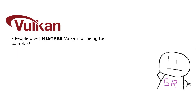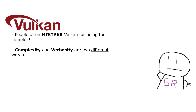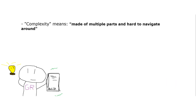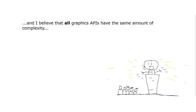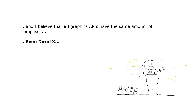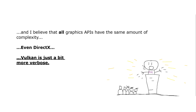Moving on to Vulkan. Most people say that the API is more complex than DirectX, but complexity and verbosity are words that mean completely different things. Complexity means made of multiple parts and hard to navigate around, while verbosity simply means expressing more. I believe that all graphics APIs have the same amount of complexity, even DirectX. Vulkan is just a bit more verbose and makes you write a little bit more code.